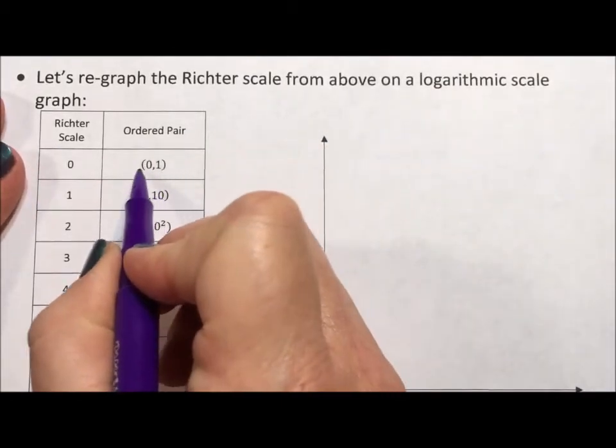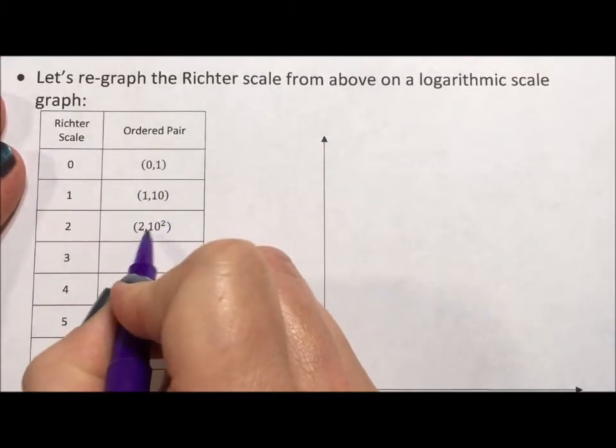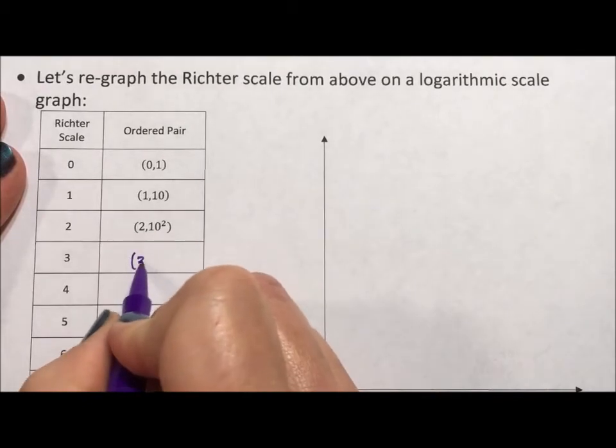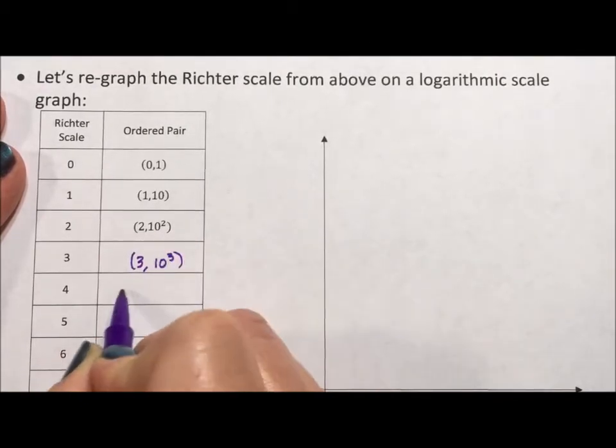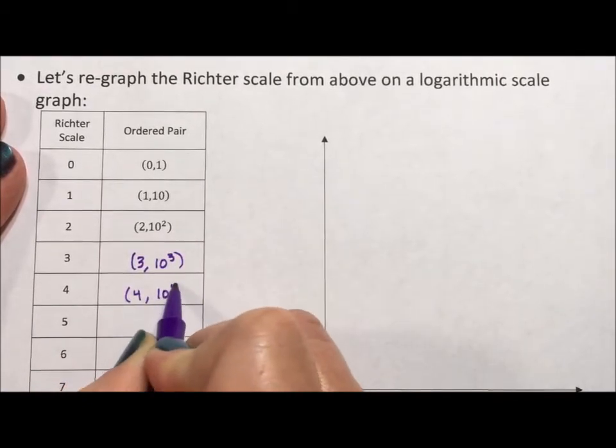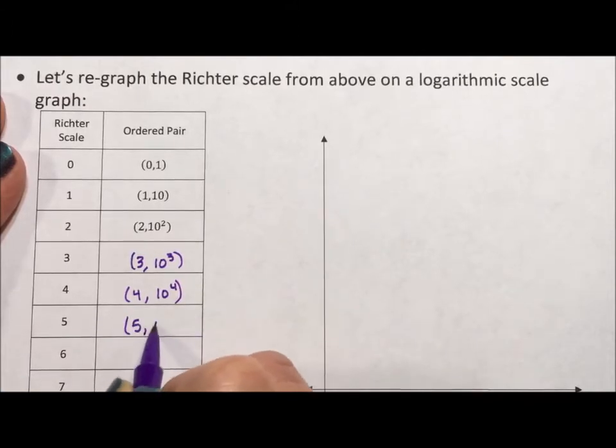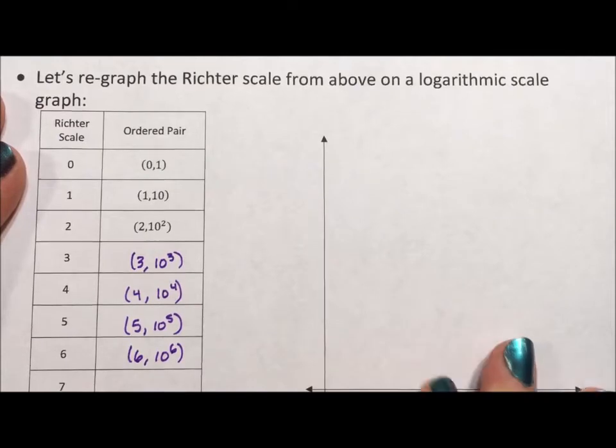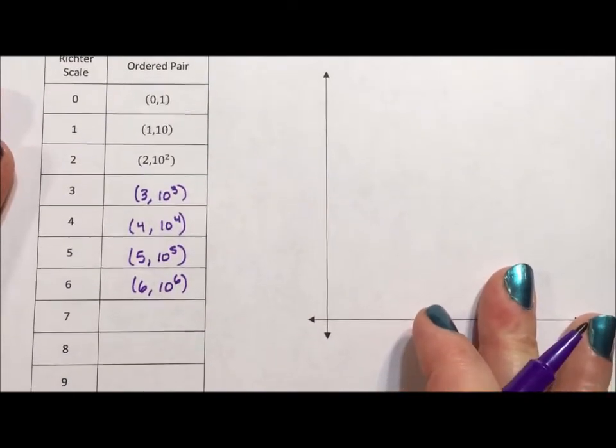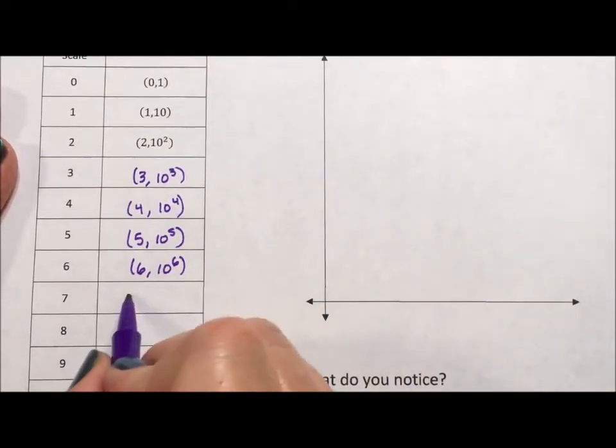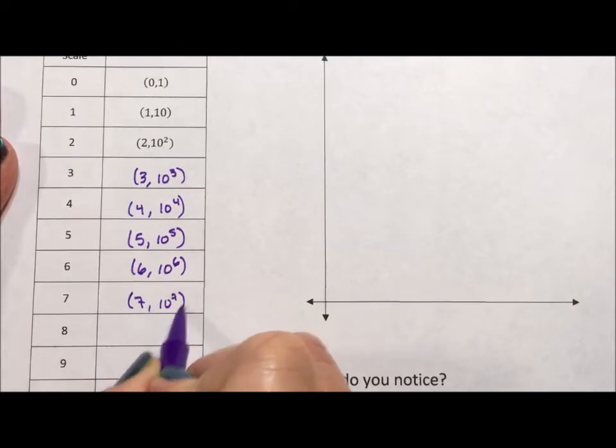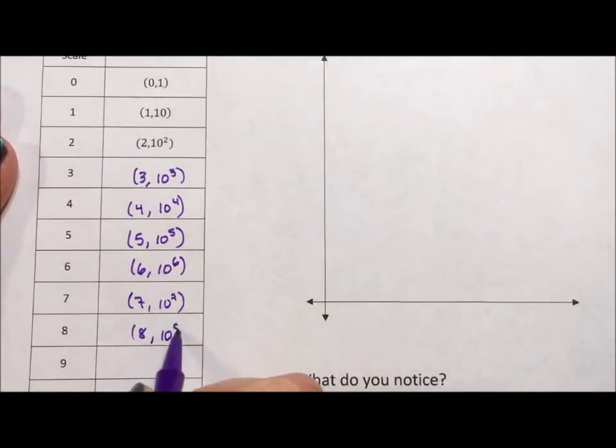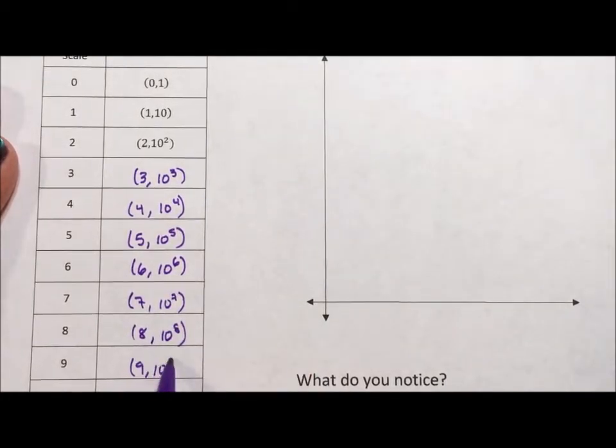And so I've started my ordered pairs: 0, 1; 1, 10; 2, 10 squared; 3, 10 cubed; 4, 10 to the fourth; 5, 10 to the fifth; 6, 10 to the sixth; 7, 10 to the seventh; 8, 10 to the eighth; 9, 10 to the 9; and 10, 10 to the 10. That's a lot of 10s there.